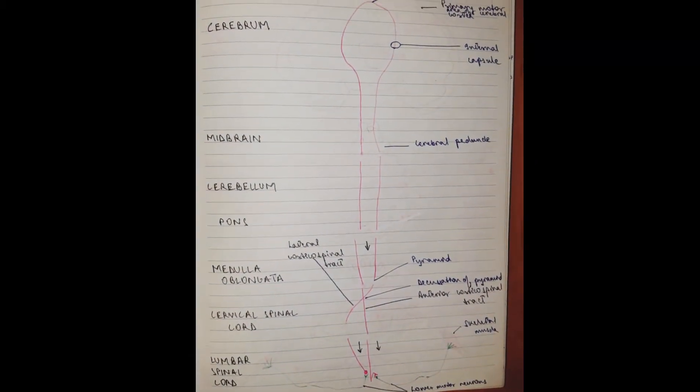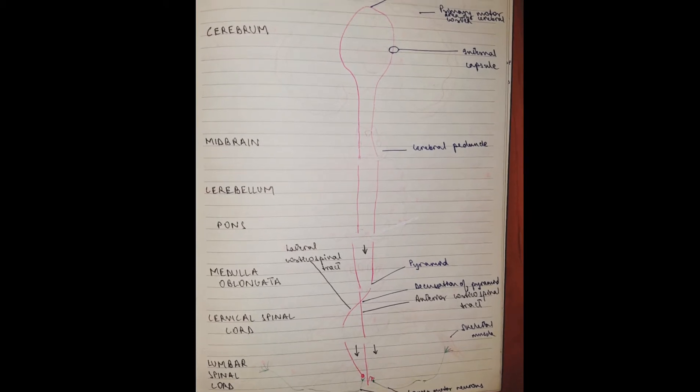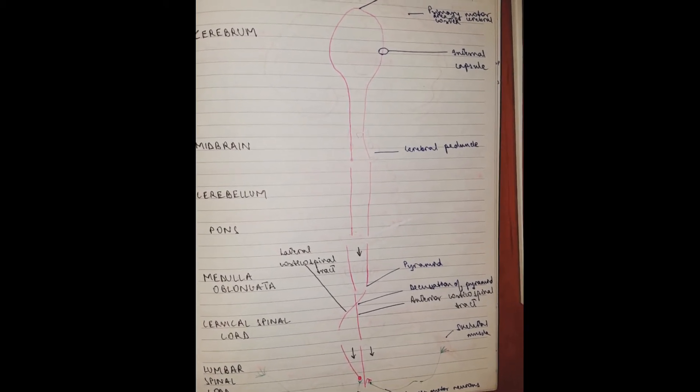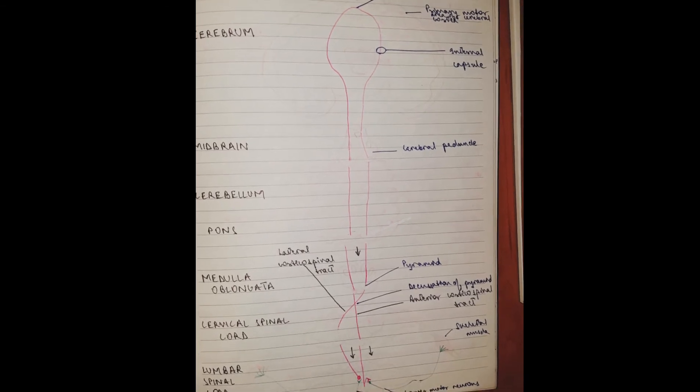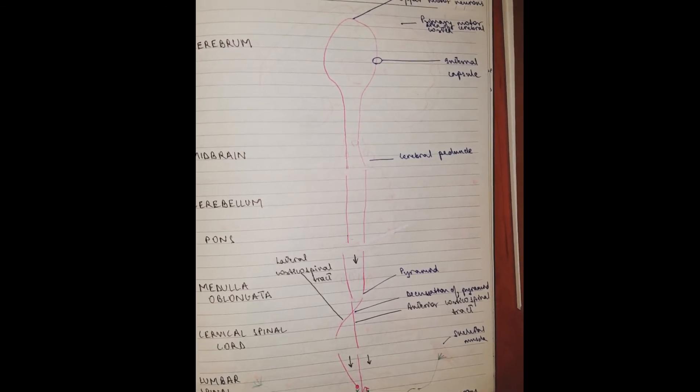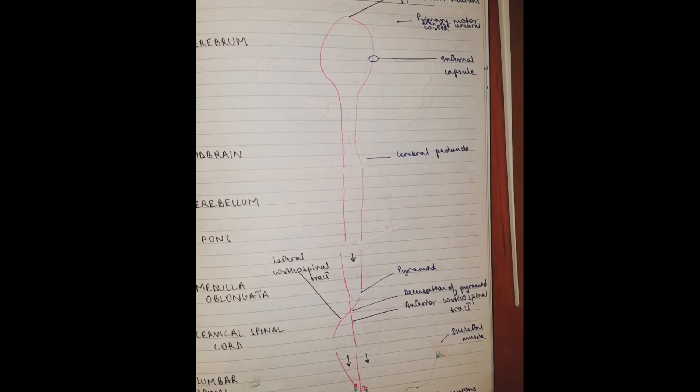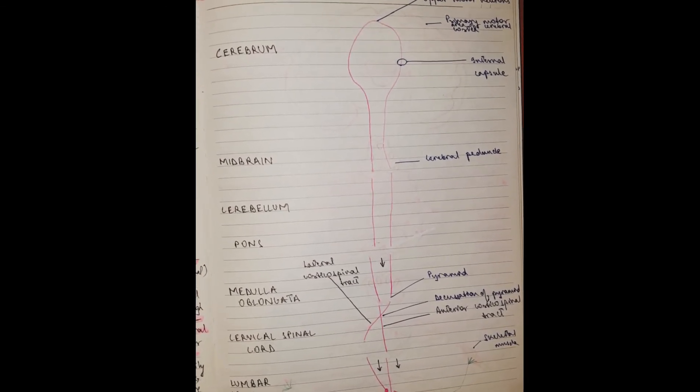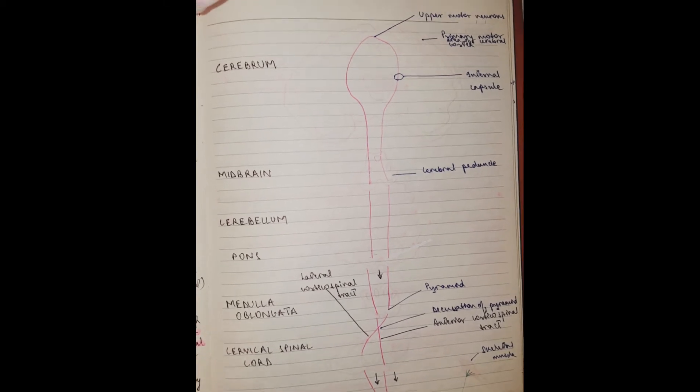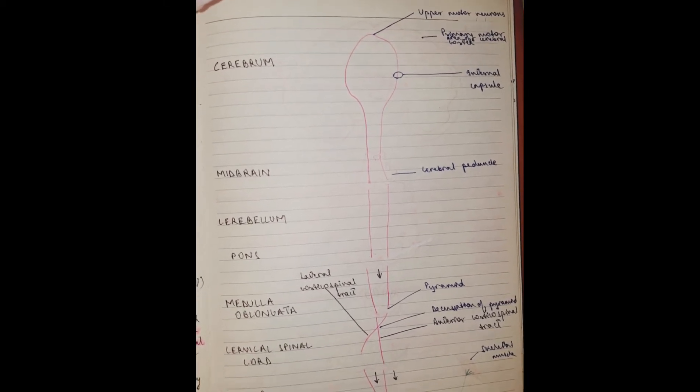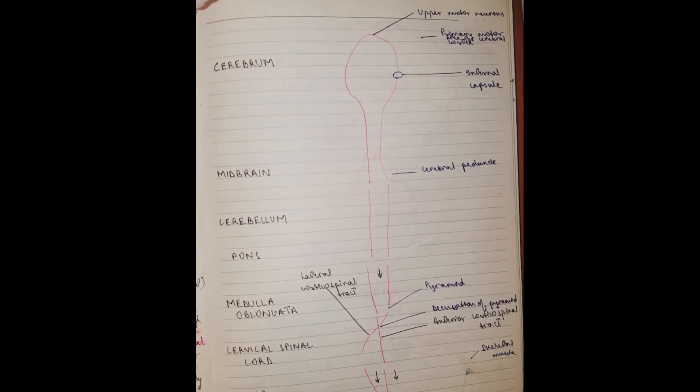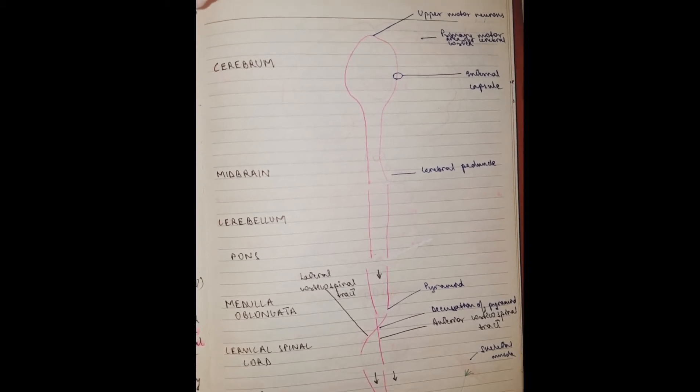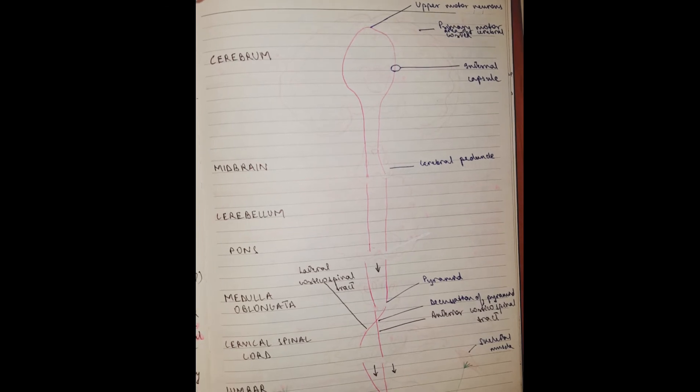Here you can see the pyramidal system. So it starts from the cerebrum, obviously the internal capsule, from the motor cortex. This is the upper motor neurons. They go down through the midbrain, the cerebral peduncles or the cerebral crura, then it goes down through the cerebellum—obviously the brainstem needs to pass that—then the pons.